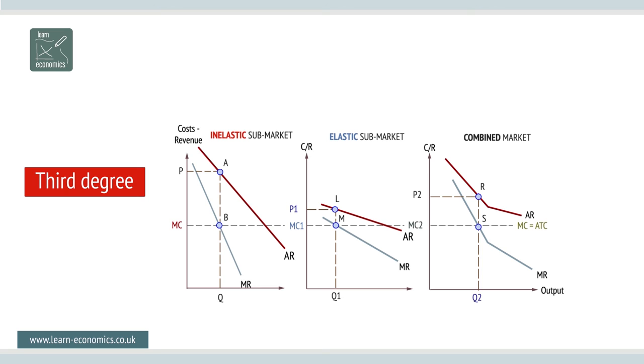In this example, profits from separating a market into an inelastic sub-market and an elastic one are greater than from combining the market. For convenience, MC is assumed constant and equal to AC. Profit maximization in each market is where the MR for each sub-market equals the common MC. Here, supernormal profits X plus Y are greater than Z, so price discrimination is beneficial.